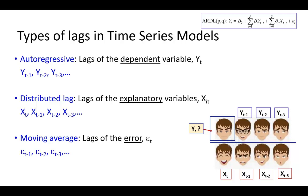When working with time series variables, especially in the context of regression, there are three types of lags that we may encounter. The first is Autoregressive, which deals with lags of the dependent variable. For example, you want to model what's happening today, so you could be looking back over the past three periods — periods could be daily, weekly, monthly, quarterly, or annually — to see whether previous behaviors impact current behavior. This is an autoregressive process.